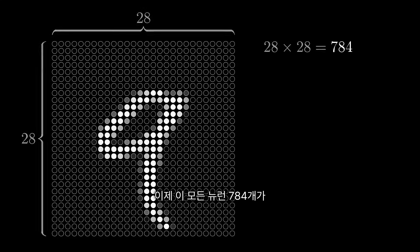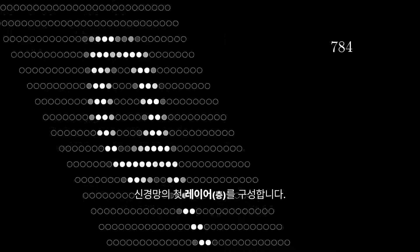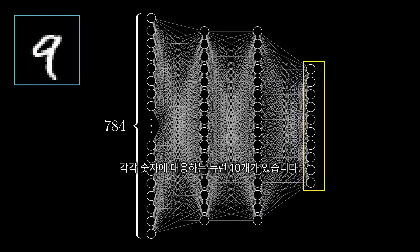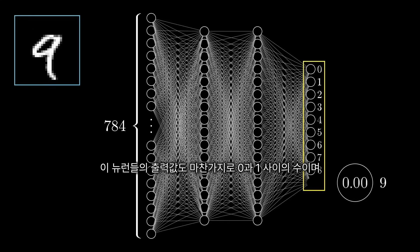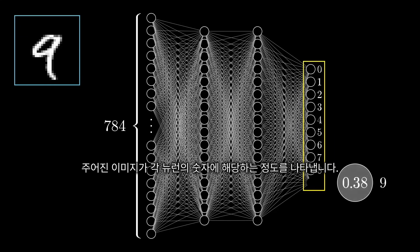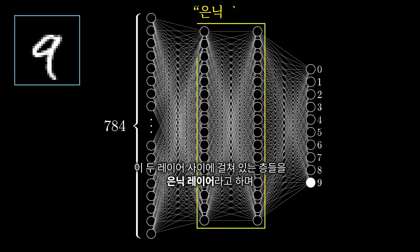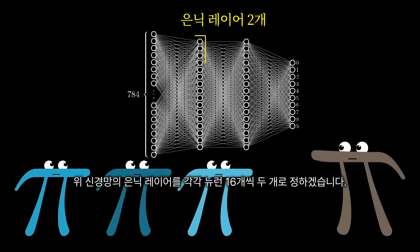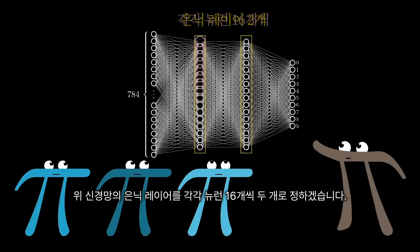So all of these 784 neurons make up the first layer of our network. Now jumping over to the last layer, this has 10 neurons, each representing one of the digits. The activation in these neurons — some number that's between 0 and 1 — represents how much the system thinks that a given image corresponds with a given digit. There's also a couple layers in between, called the hidden layers, which for the time being should just be a giant question mark for how on earth this process of recognizing digits is going to be handled. In this network, I chose two hidden layers, each one with 16 neurons.